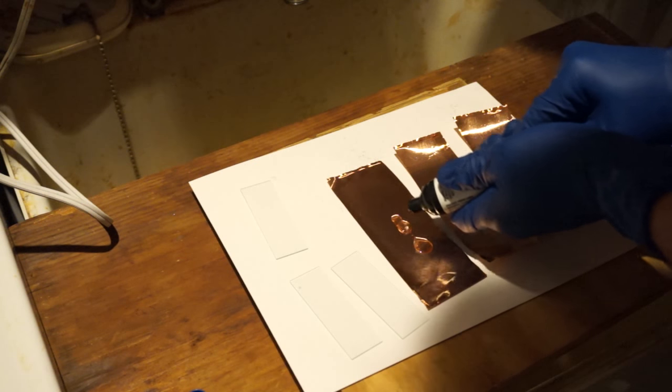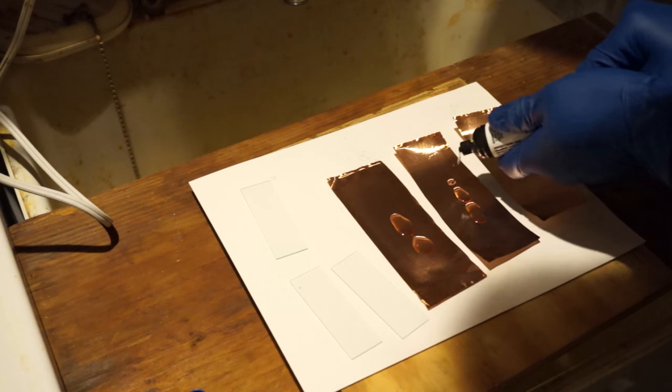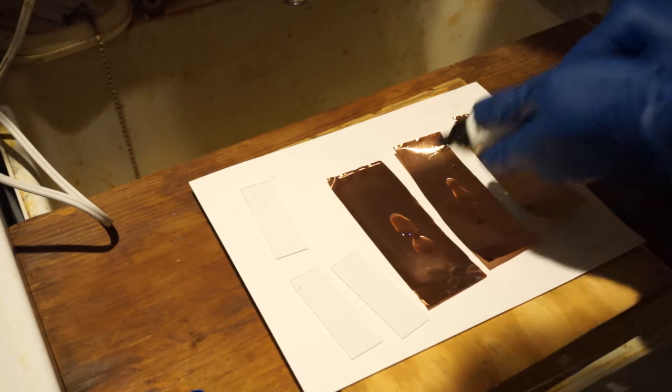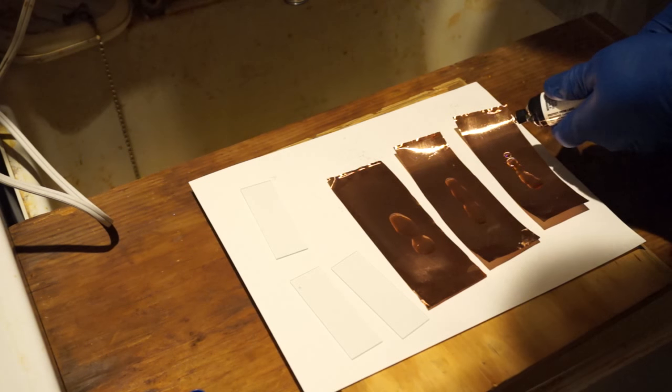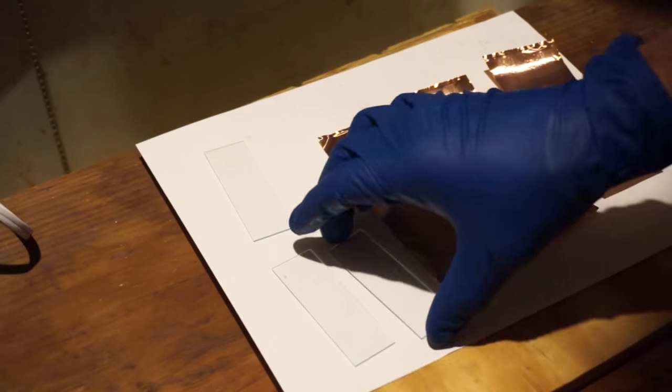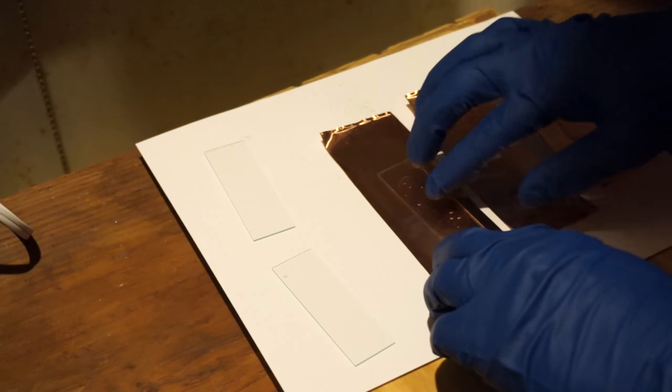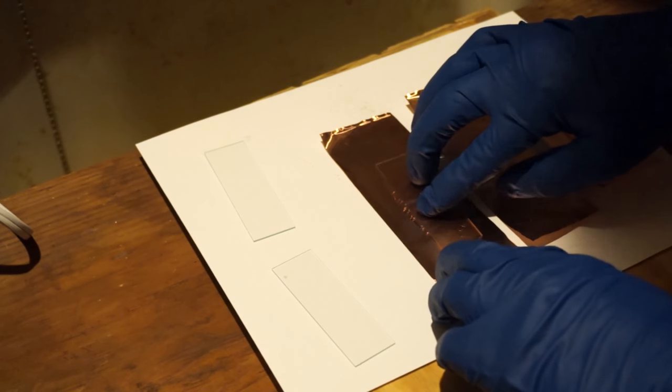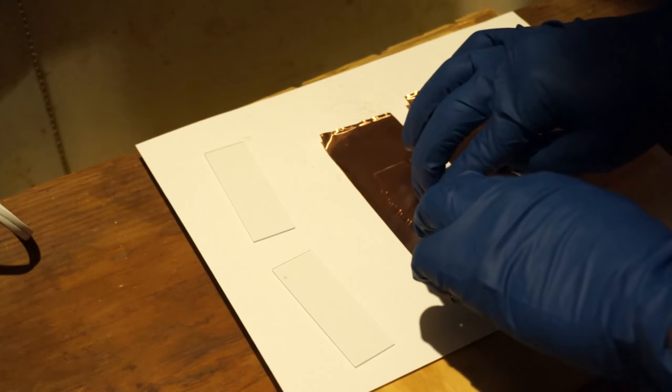This Loctite 3301 is just amazing. I had used several different types of glues. And I finally settled on this one because it has a very low viscosity, which makes it easy to squeegee it to the edges. And it's resistant to the potassium hydroxide that I use later on in the process, whereas other materials will just disintegrate immediately when they come in contact with it.